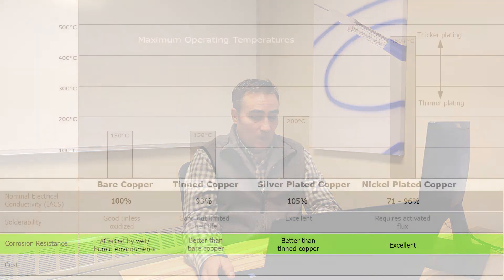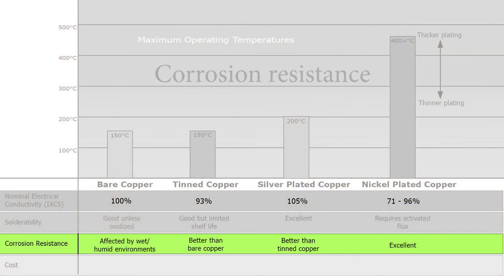When it comes to corrosion resistance, nickel plated copper is the best performer of the group. Applications for nickel include aerospace, industrial sectors, and other high temperature environments.